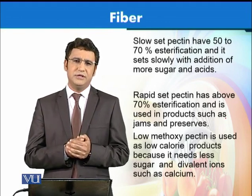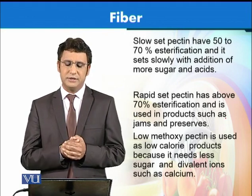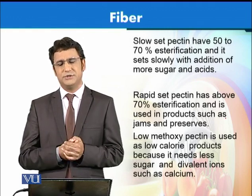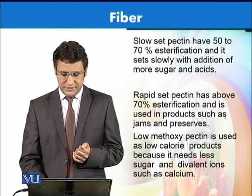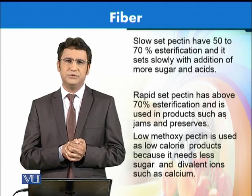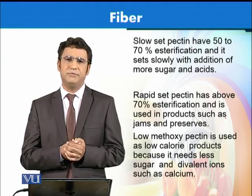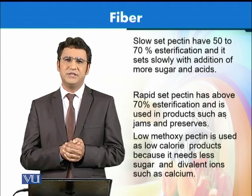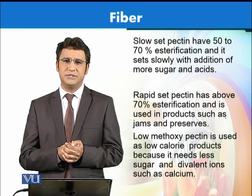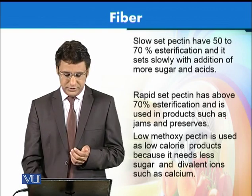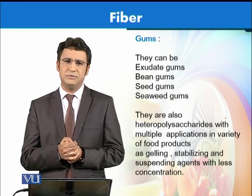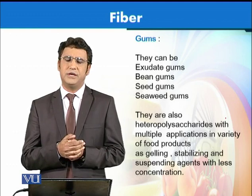The difference between slow-set and fast-set pectin is that slow-set pectin has 50 to 70 percent esterification, whereas when esterification is more than 70 percent, we call it fast-set pectin. Similarly, there are low-methoxy pectins available in the market, used in products like diet jams because they require a lesser amount of sugar to make gels, and are basically produced to make diet products.